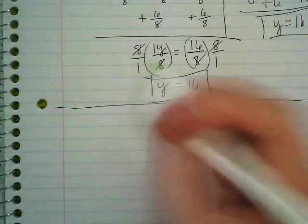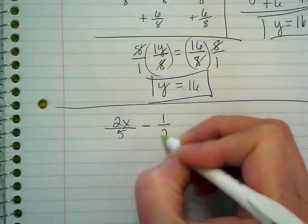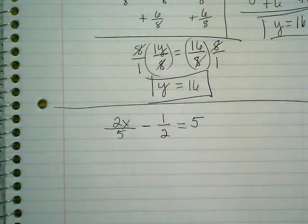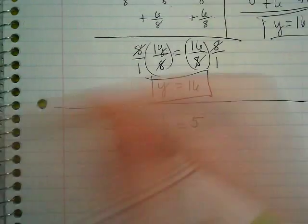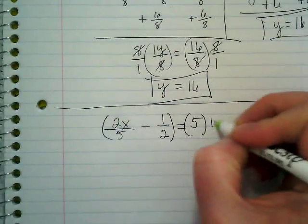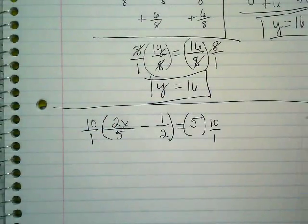It's a lot of writing, so I'm going to move my page up there. Write 2x over 5 minus 1 half equals 5. If you were going to make those common denominators, what number would you use? That's the same number I can multiply by to get rid of my denominators. Do you see my thinking there?